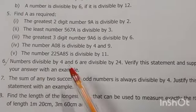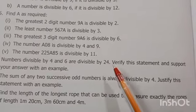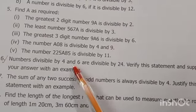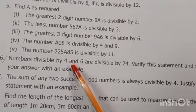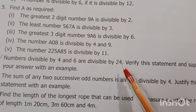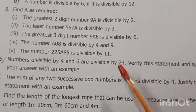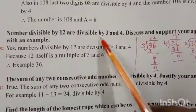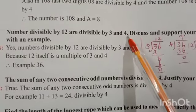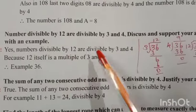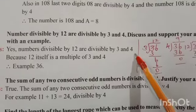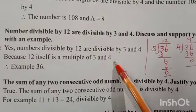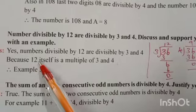Sixth question: Numbers divisible by 4 and 6 are divisible by 24 — verify this statement with an example. We have to prove this. The number divisible by 12 is also divisible by 3 and 4, because 12 itself is a multiple of 3 and 4. So it is exactly divisible.